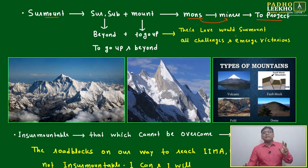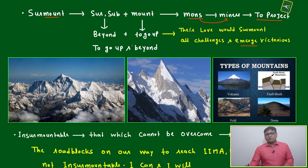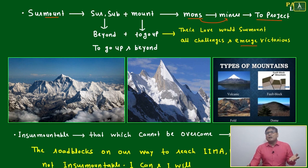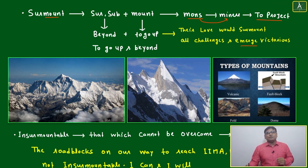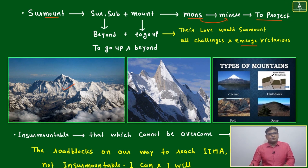'Their love would surmount all challenges and emerge victorious.' This written example means to go up and beyond — that is surmount. Surmount means your willpower or your preparation is such that you will surmount all the challenges that come in your way and you will become victorious. This looks very beautiful.